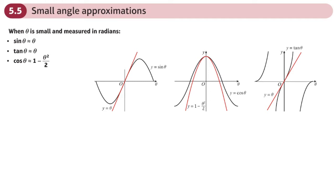There are some graphs here that may help us understand. The red line is the graph of y equals theta, and the black line is the graph of sine theta. You can see the bit highlighted in yellow — they pretty much are the same value. As theta gets bigger, they sort of diverge and the graphs go further apart.